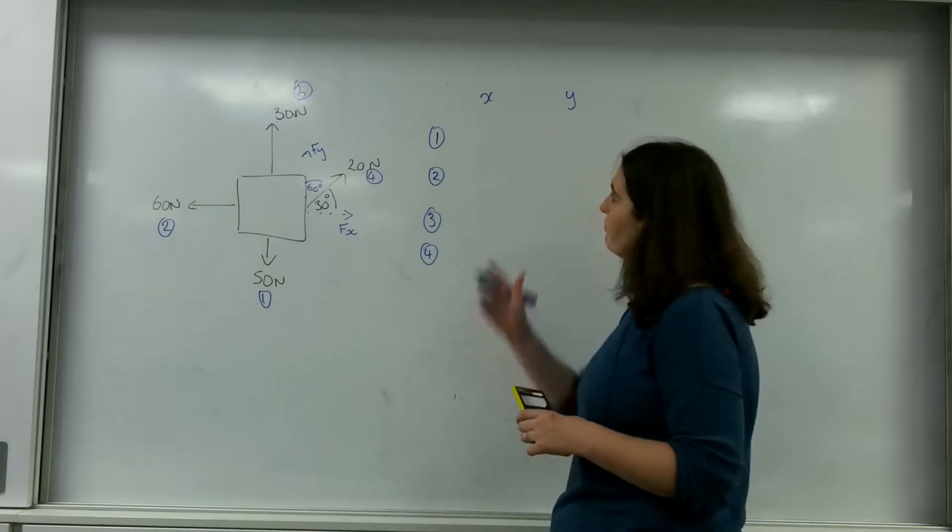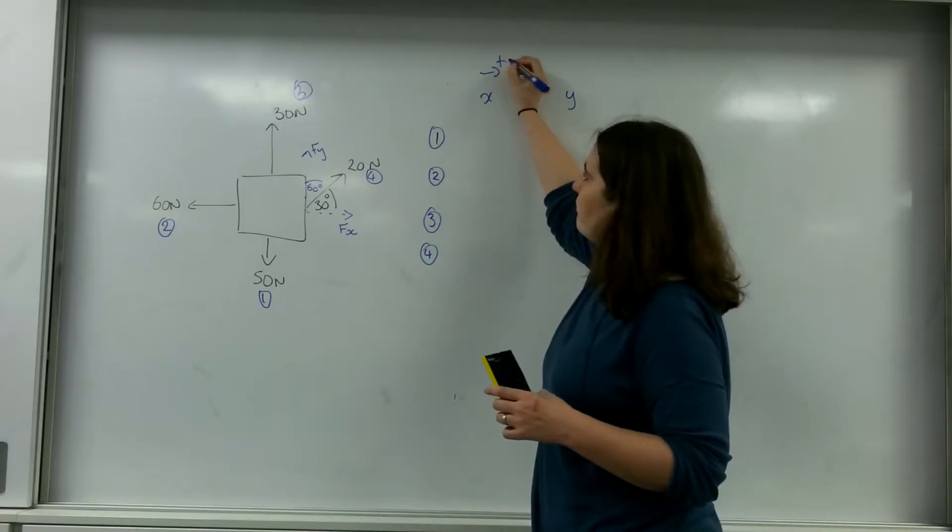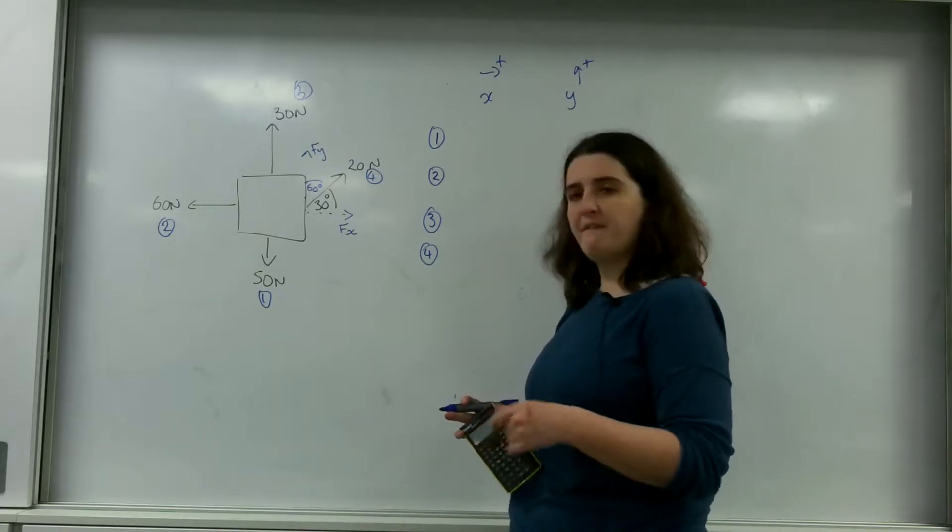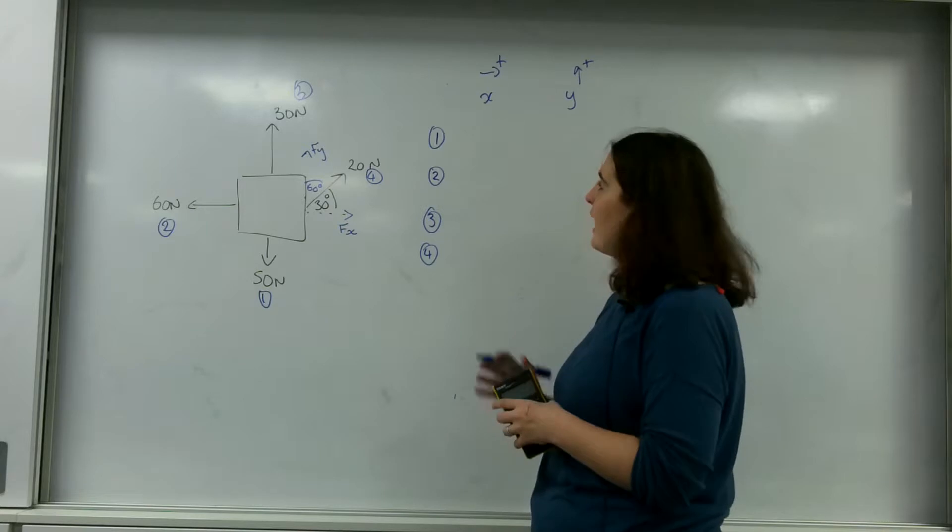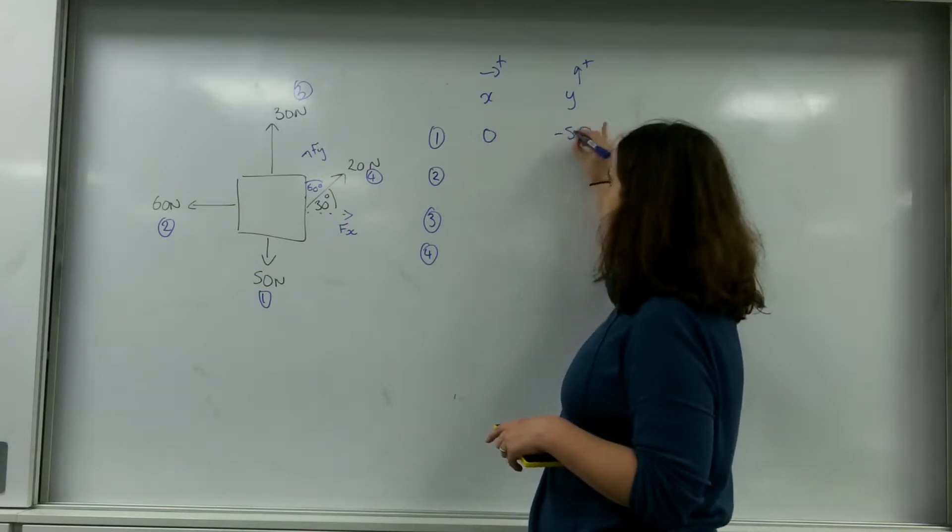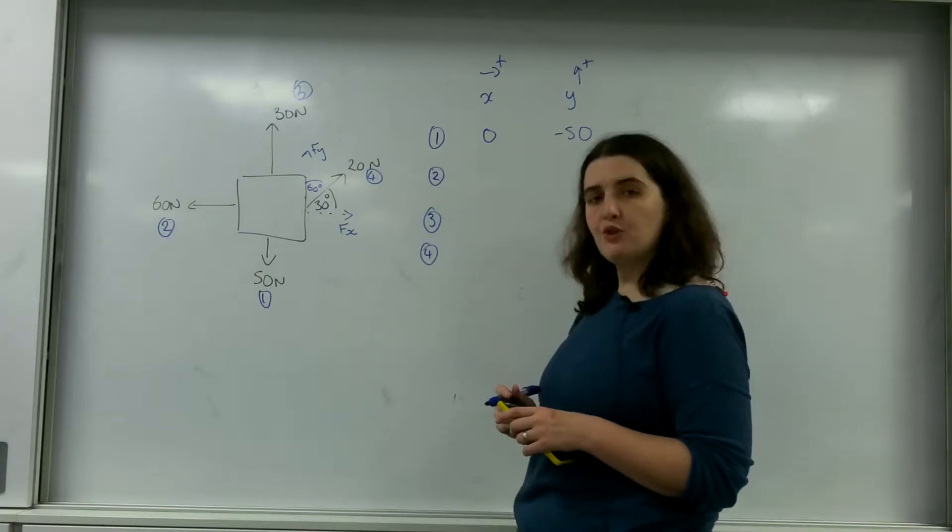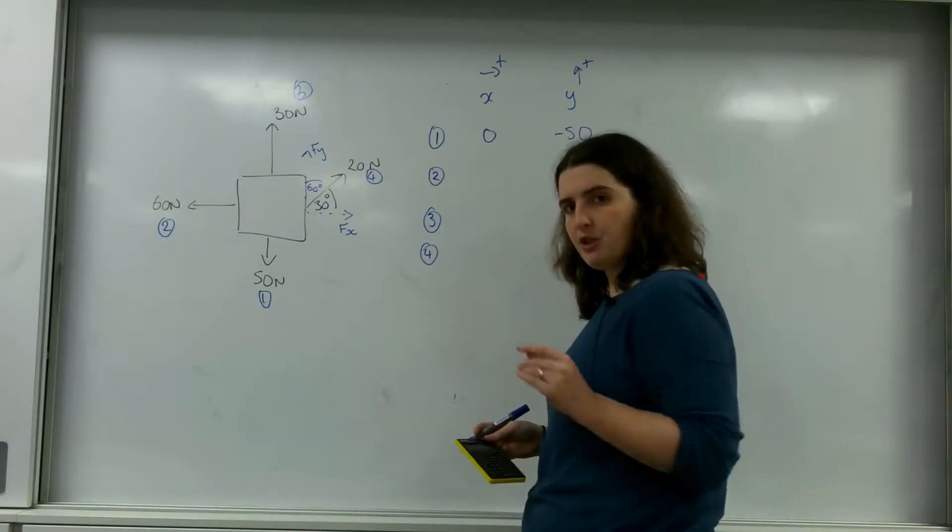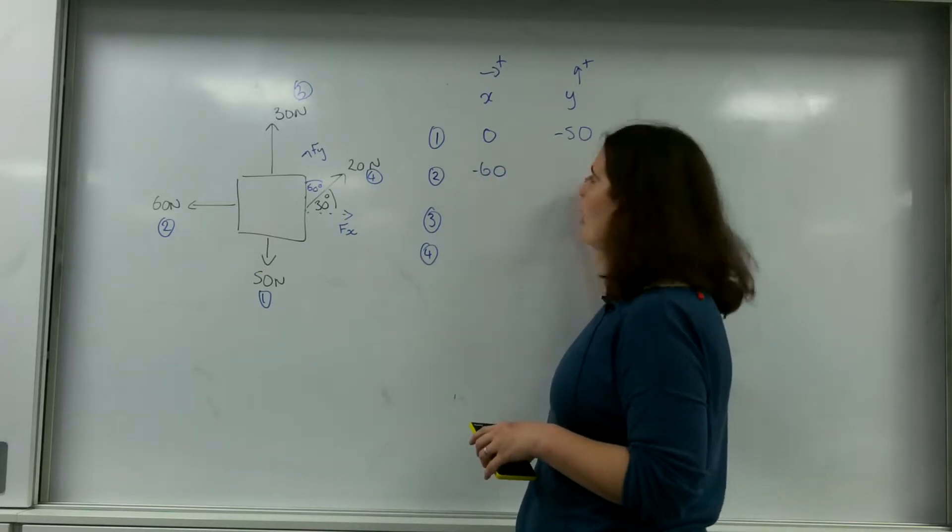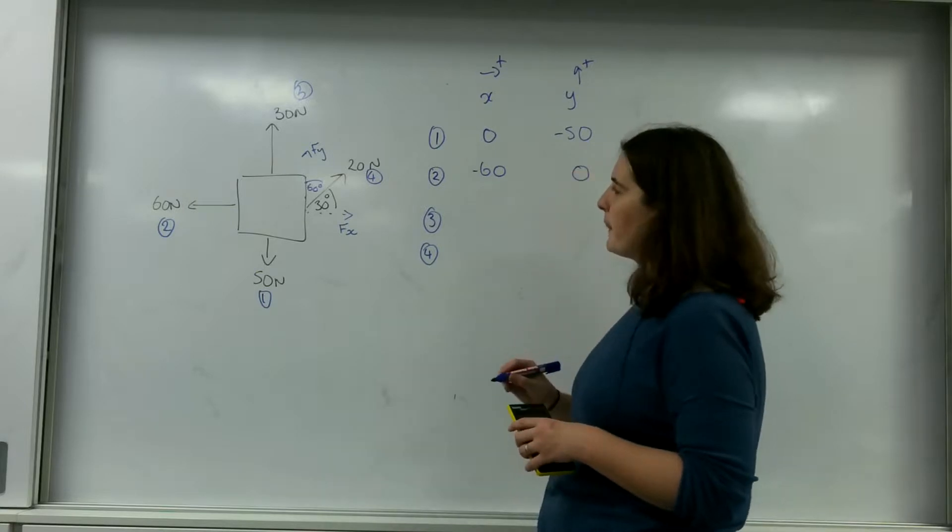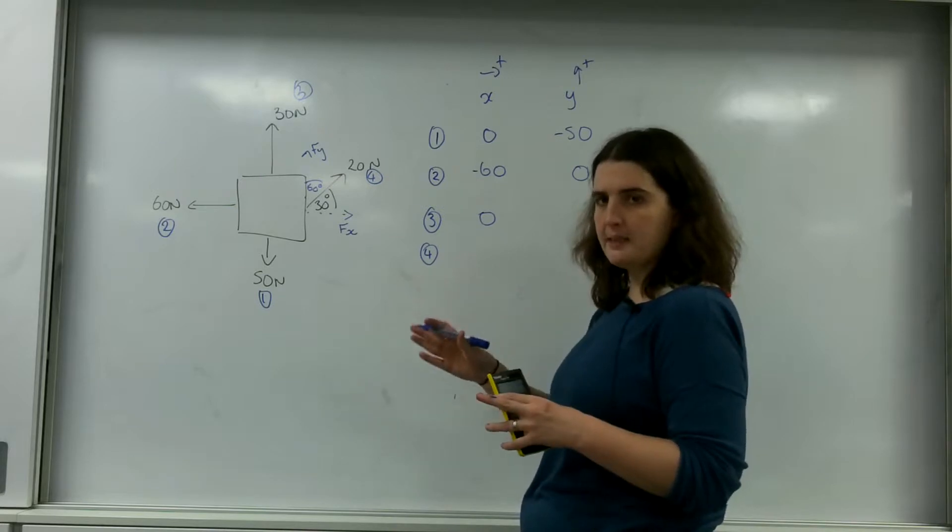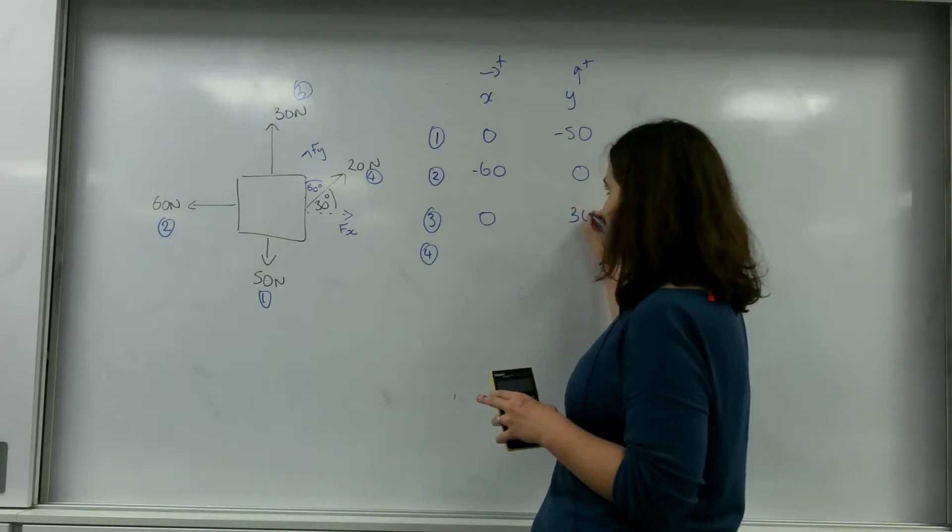Force number one, and remember right is positive and up is positive. Force number one is going 50 down in the y axis. There's nothing in the x but it's going 50 down in the y so it's minus 50. Number two is going negatively in the x because it's going this way so it's minus 60, but it's not working in the y.